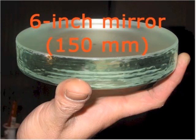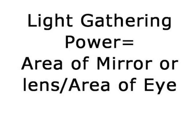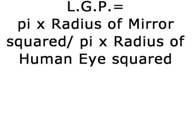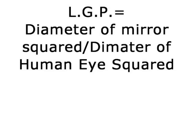The light-gathering power is calculated by comparing how much light falls on that 6-inch mirror compared to how much light falls on your eye when it is fully dilated. To calculate area, it's pi r squared. So you compare the area of the mirror or lens to the area of the eye. Light-gathering power is pi times the radius of the mirror squared, divided by pi times the radius of the human eye squared. There's an easier way: just take the diameter of the mirror, square it, and take the diameter of the human eye and square that — for practical purposes, 7 times 7, which is about 50.